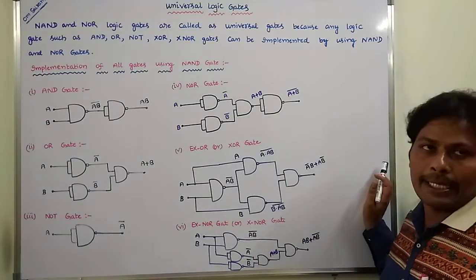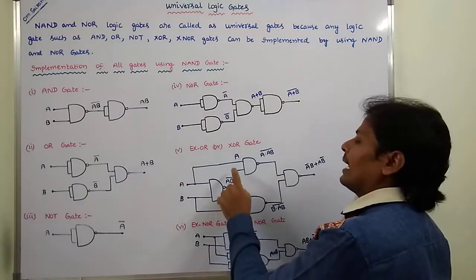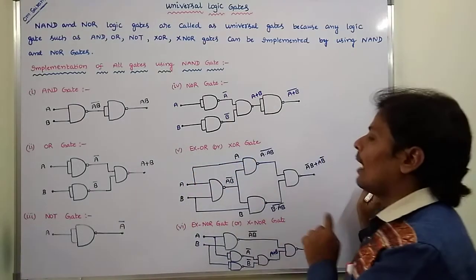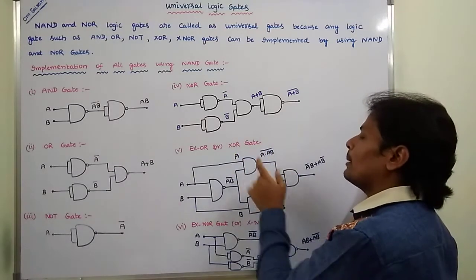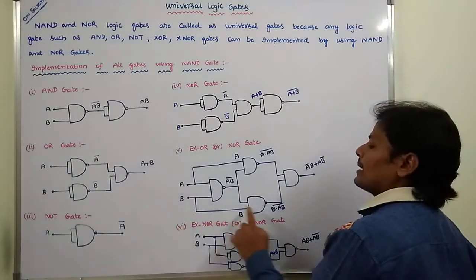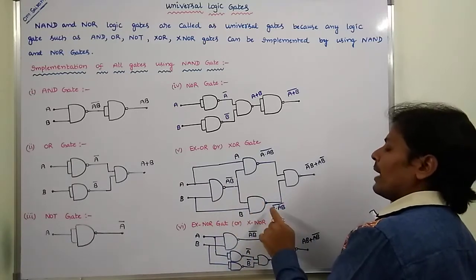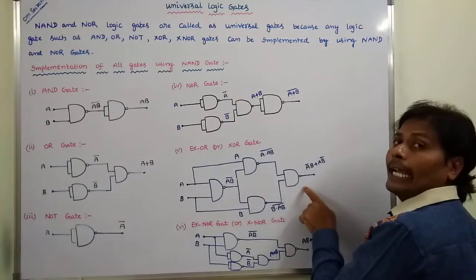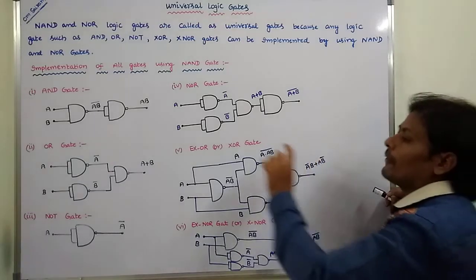Next, exclusive OR gate or XOR gate. So inputs A and B are applied to the NAND gate, then we are getting AB whole bar. One input and the output AB whole bar are applied to the NAND gate, then we are getting A into AB whole bar. The second input B and the output AB whole bar are applied to another NAND gate, then we are getting B into AB whole bar. So this output and this output can be applied to the NAND gate as two inputs, then we are getting the output A bar B plus A B bar. This is the output of exclusive OR gate.